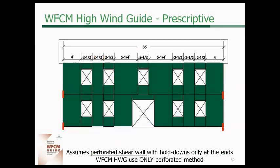The WFCM allows you to design shear walls using either individual full height segments — the segmental approach — or the perforated shear wall method. With individual full height segments you need more hold-downs at more locations. The WFCM High Wind Guides only use the perforated method, assuming hold-downs only at the ends of walls, while accounting for openings through the perforated shear wall design method.